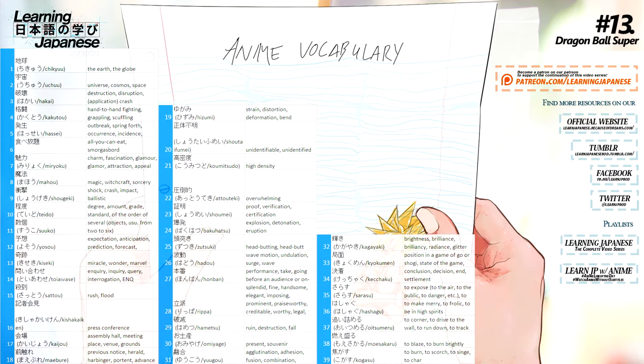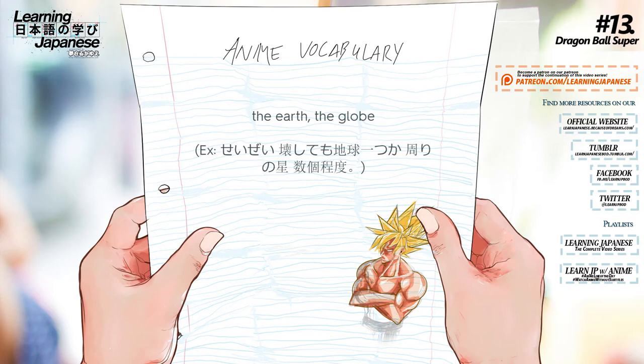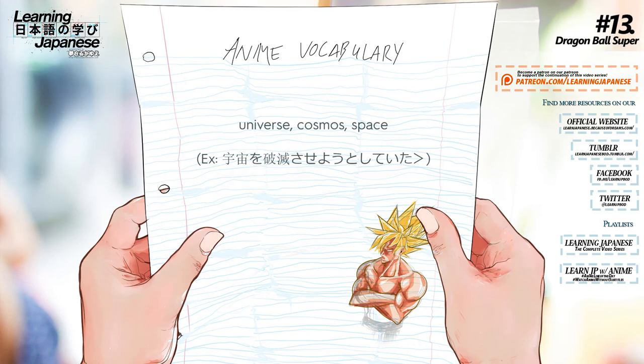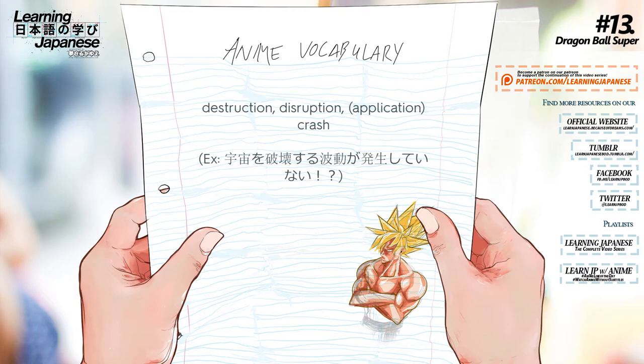地球 — The Earth, The Globe. 宇宙 — Universe, Cosmos, Space.